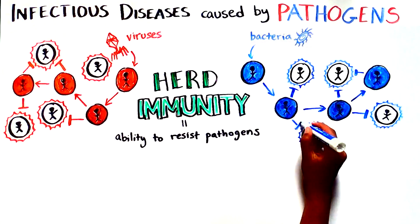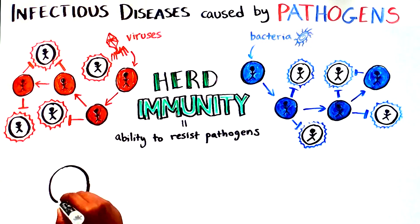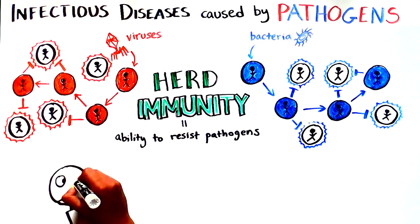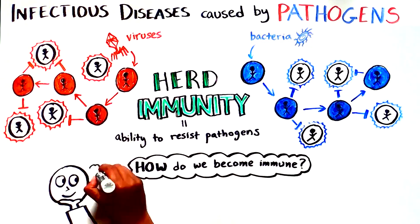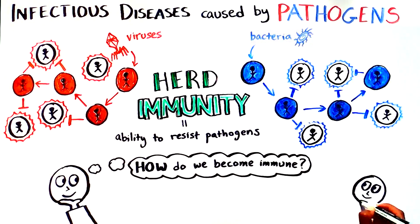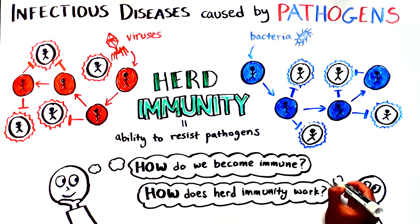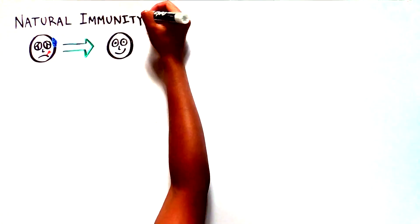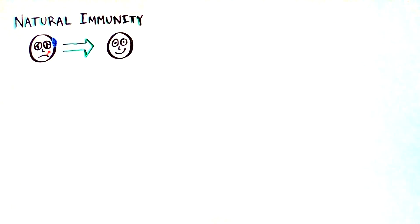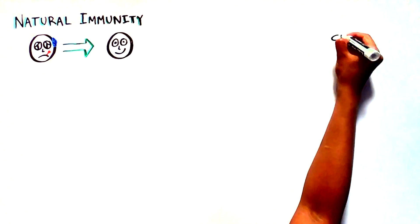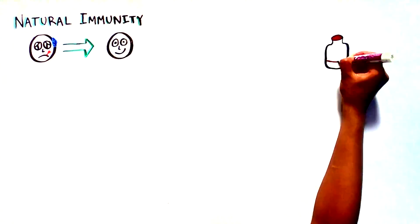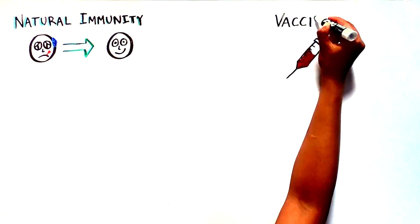To understand herd immunity, we first need to understand how we become immune to pathogens and how herd immunity works under ideal circumstances. Our bodies can gain immunity to pathogens in one of two ways: by getting and recovering from an infection, also known as natural immunity, or by receiving a vaccination.